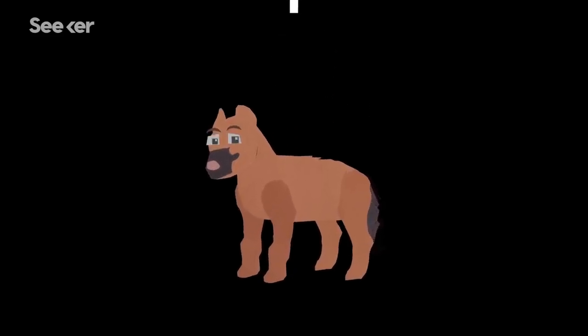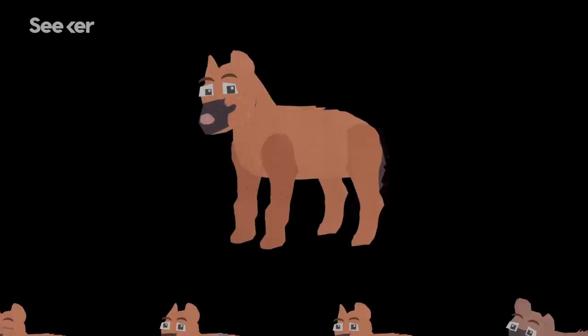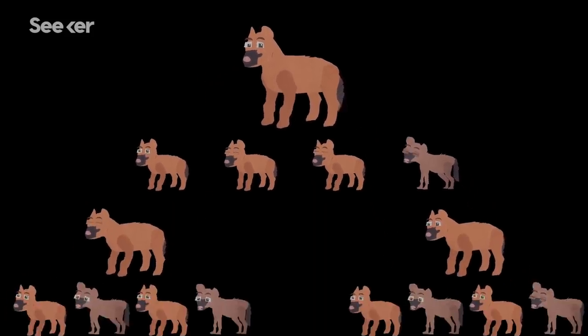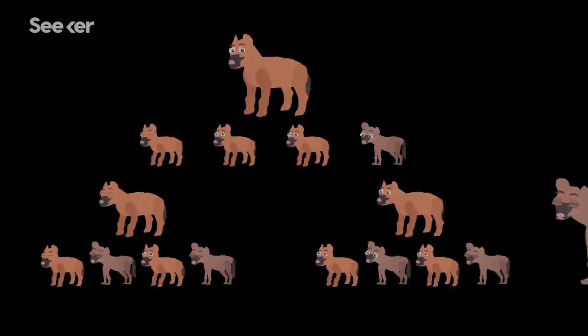The dominant females are highest on the social scale, followed by their own cubs, then lower ranking females and their cubs, and finally, adult males.